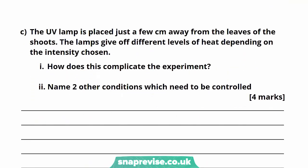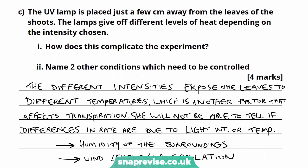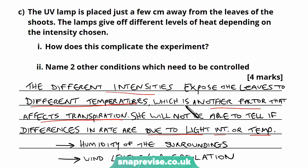Part C: the UV lamp is placed just a few centimetres away from the leaves of the shoots. The lamps give off different levels of heat depending on the intensity chosen. This complicates the experiment because the different intensities expose the leaves to different temperatures, which is another factor that affects transpiration. She will not be able to tell if the differences in transpiration rate are due to light intensity or temperature, since she is unable to control temperature when the lamps emit different levels of heat.